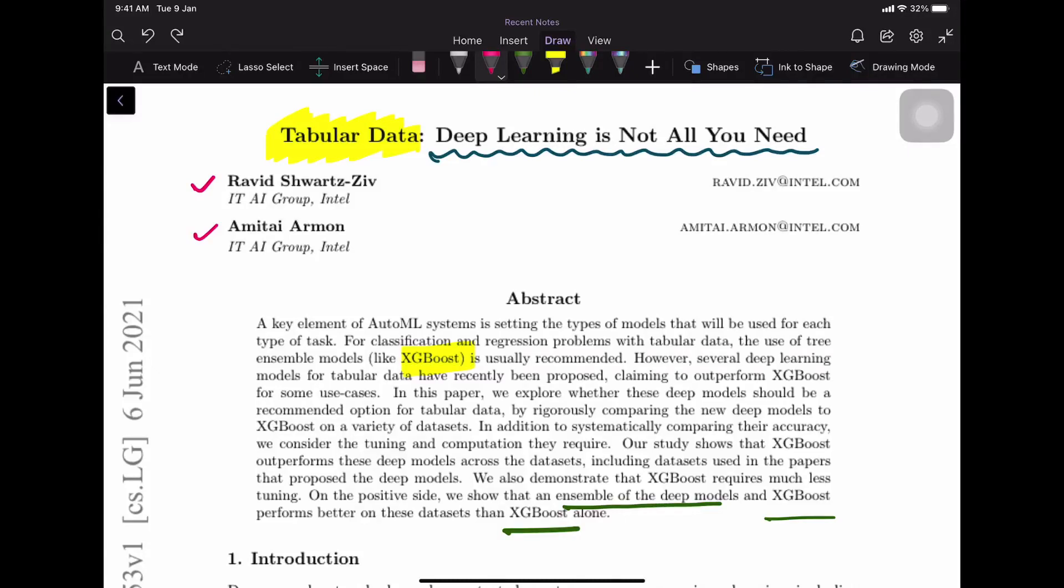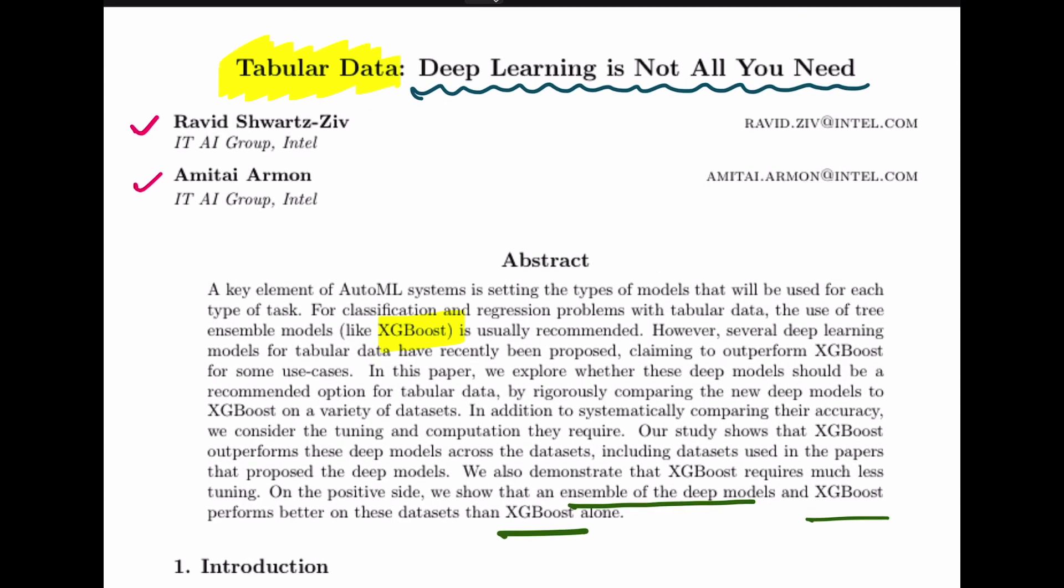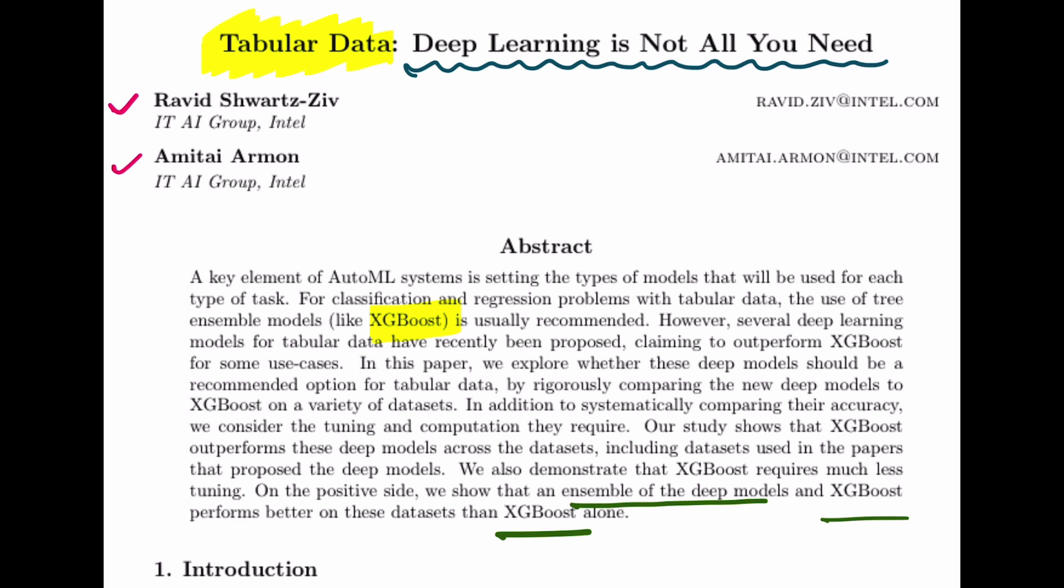Dear fellow coders, welcome to One Little Coder. A quick disclaimer: this video doesn't have any code at all. This video is a summary of a very interesting paper that I recently came across. The title of the paper is Tabular Data: Deep Learning is Not All You Need. From the title you can understand that what they are trying to propose is for tabular data, deep learning is not all you need.